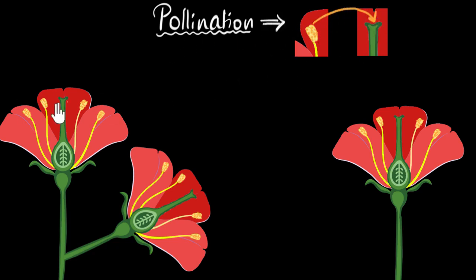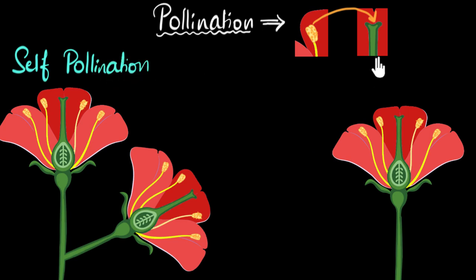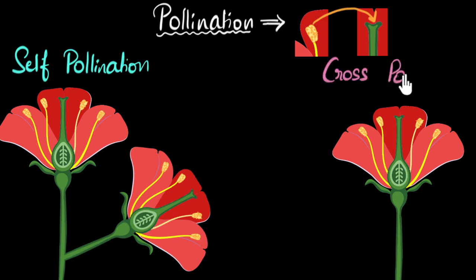Based on whether the pollen grains are transferred within the same plant or between two different plants, we can classify pollination into two kinds. The first one is called self-pollination, and the second one is called cross-pollination.